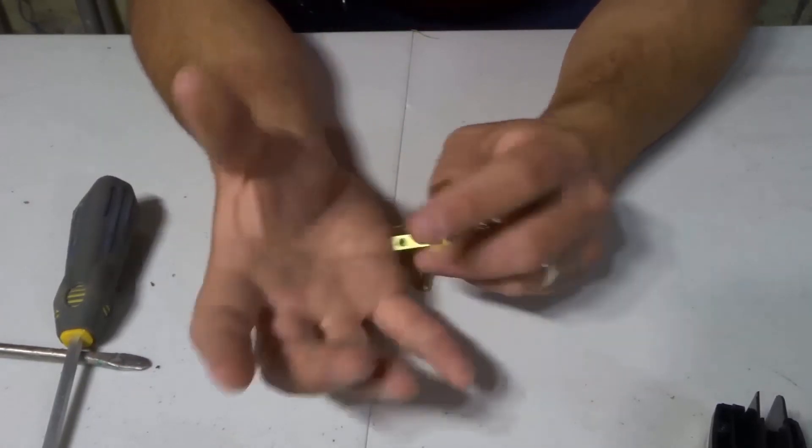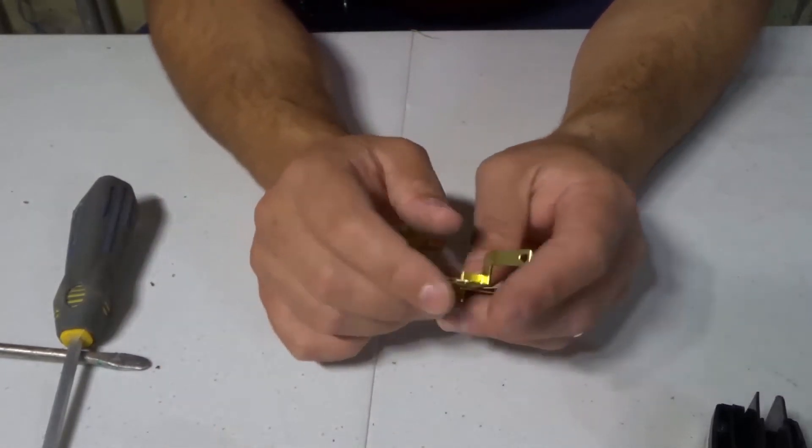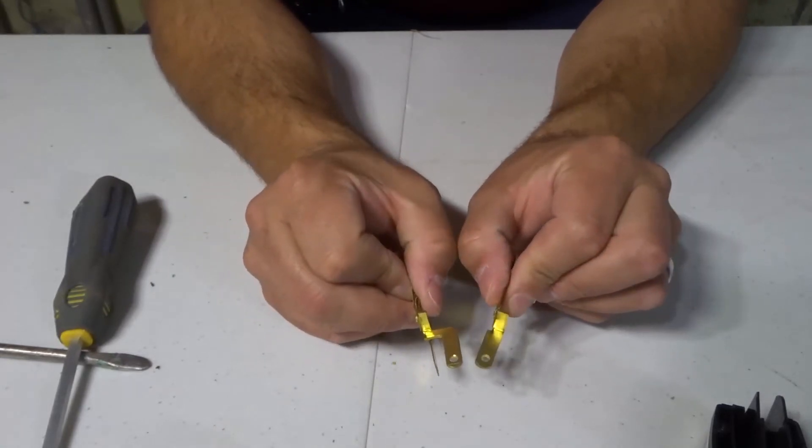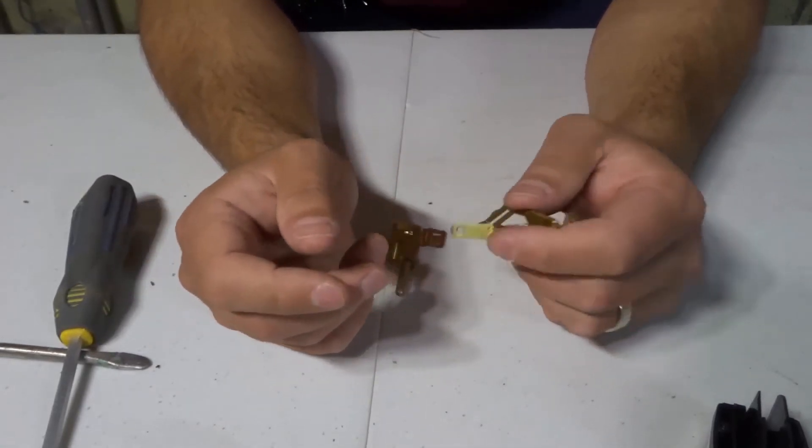When you have polarity with a plug one side is bigger than the other. It can only be inserted in one way. When they're both the same size there's no polarity with this plug. Very simple.